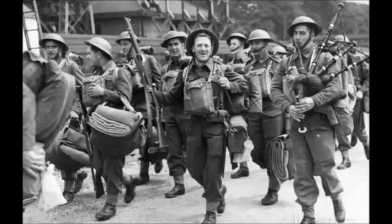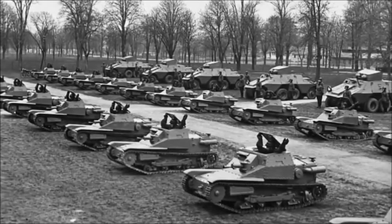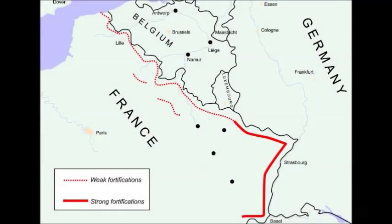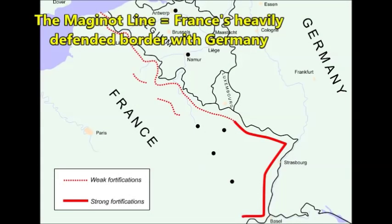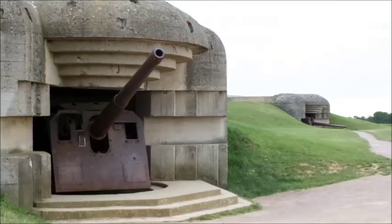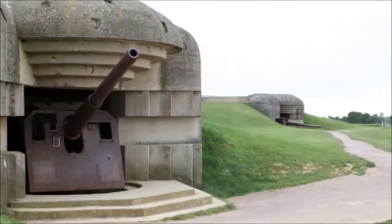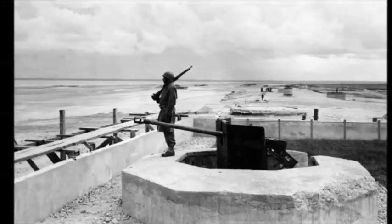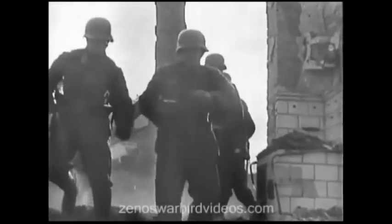Meanwhile, as battles raged in Eastern Europe, the British and French began preparing to face the Germans along the old battle lines of World War One's Western Front. They stationed troops along France's northeastern border near a line of heavy fortifications known as the Maginot Line, built in the aftermath of World War One to discourage a German invasion. Allied armies sat and waited for the German Blitzkrieg — but surprisingly, nothing happened. Instead, Hitler turned his armies north to invade Denmark and Norway. Denmark surrendered in just about four hours; Norway surrendered two months later.